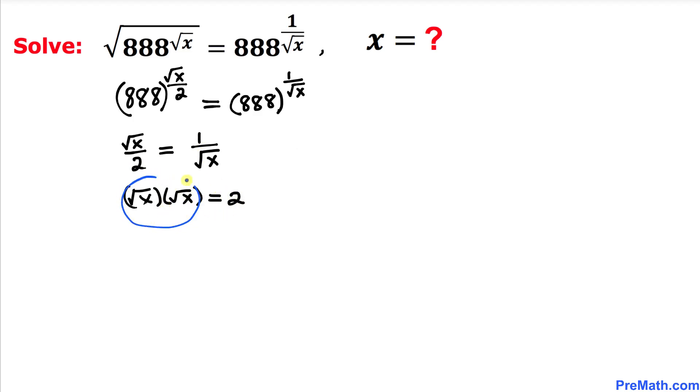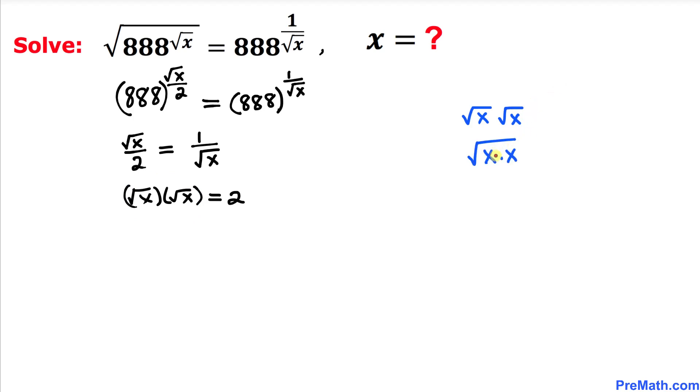Now let's focus on the left-hand side. This can be written as the square root of x times x, which is the square root of x squared. The square and square root undo each other, so we simply get x.